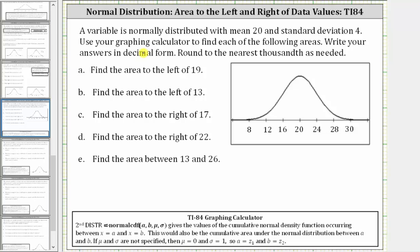In this video, I will show how to use the TI-84 to determine area under the normal distribution curve. A variable is normally distributed with mean 20 and standard deviation four. Notice I've already set this up on the graph shown here, where the mean of 20 is at the center of the distribution and the horizontal axis is scaled by the standard deviation of four. We're asked to use the graphing calculator to find each of the following areas in decimal form and round to the thousandths place value.